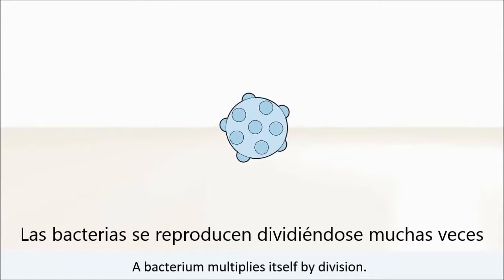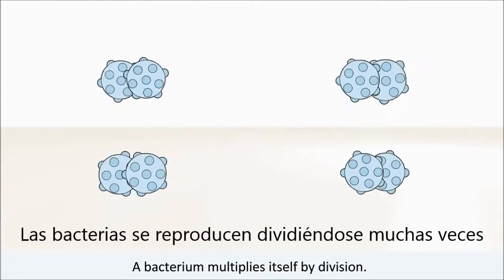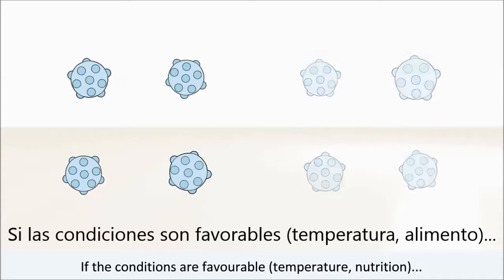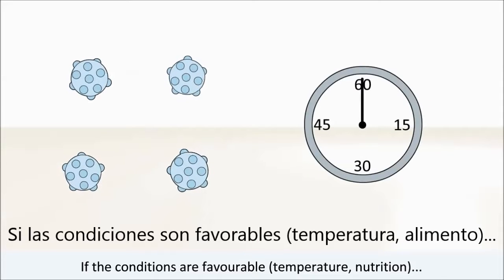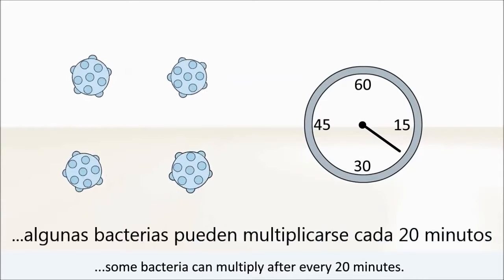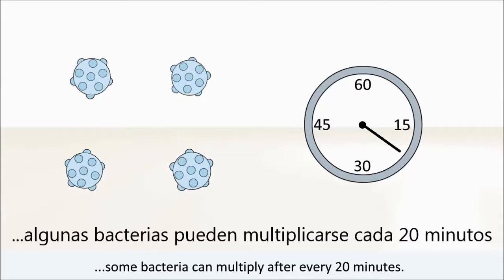A bacterium multiplies itself by division. If the conditions are favourable — temperature, nutrition — some bacteria can multiply after every 20 minutes.